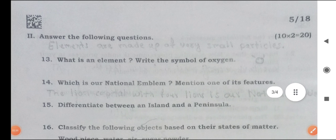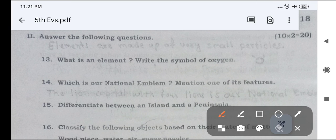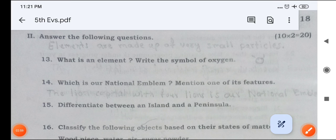Answer the following questions. What is an element? Write the symbol of oxygen. Elements are made up of very small particles. Symbol of oxygen is O. Which is our national emblem? Mention one of its features. The lion capital with four lions is our national emblem.